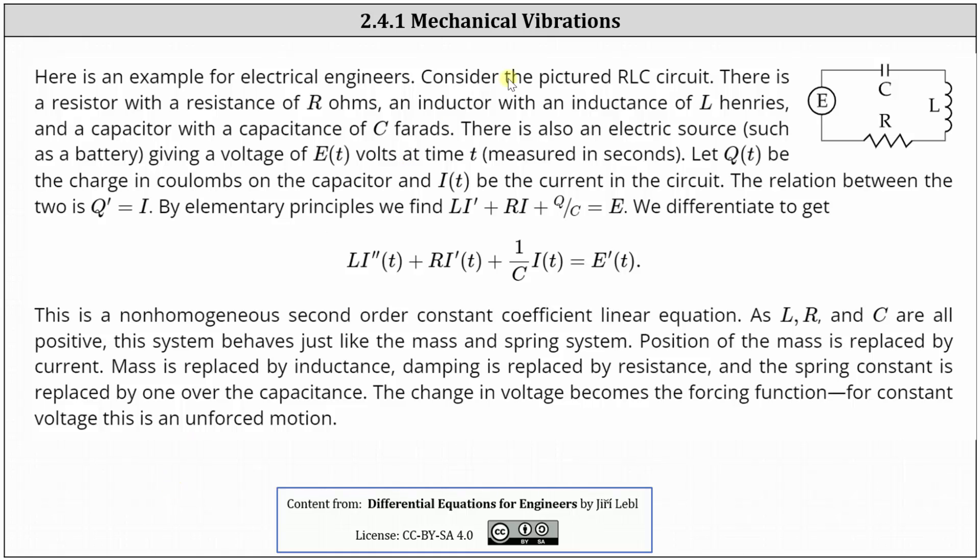Here's an example for electrical engineers. Consider the pictured RLC circuit. There is a resistor with a resistance of R ohms, an inductor with an inductance of L henrys, and a capacitor with a capacitance of C farads. There's also an electrical source, such as a battery, giving a voltage of E(t) volts at time t measured in seconds. Let q(t) be the charge in coulombs on the capacitor, and i(t) be the current in the circuit. The relationship between the two is q' = i. By elementary principles, we have Li' + Ri + q/C = E.